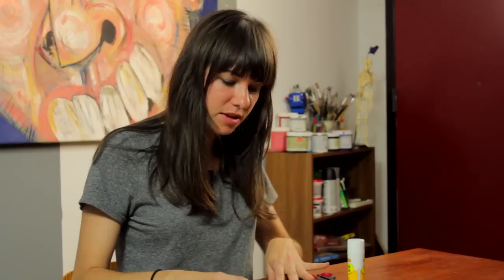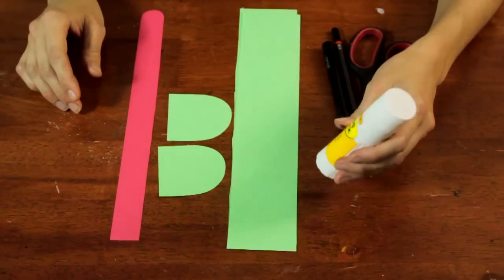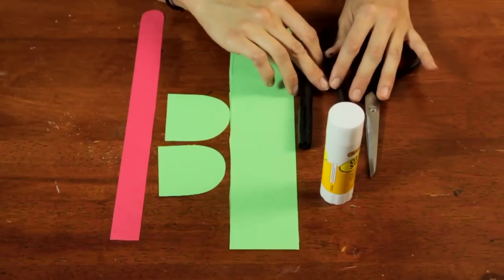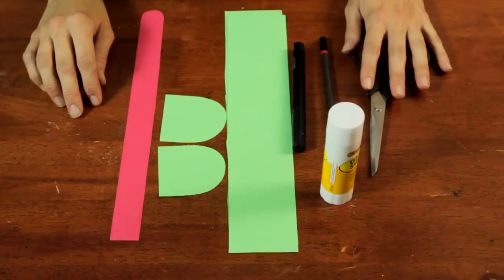So you'll need some construction paper, green and red. You'll also need a glue stick, a black marker, pencil, and a pair of scissors.